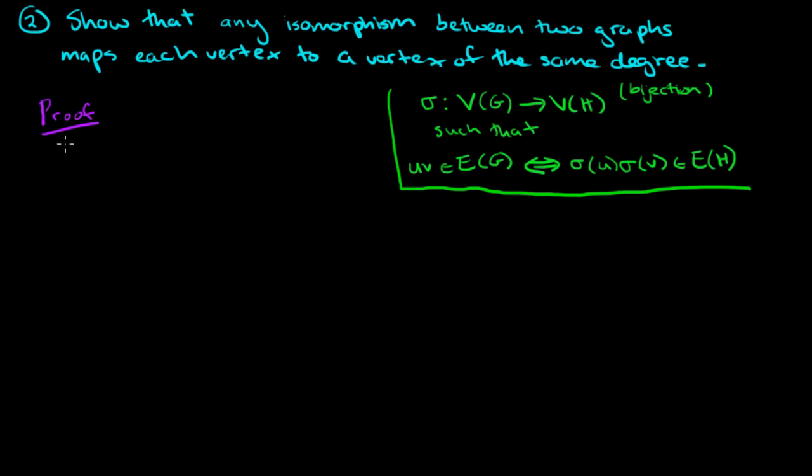So let's suppose there is an isomorphism. Suppose sigma is an isomorphism from G to H. And remember what an isomorphism is: it maps the vertices of G to the vertices of H as a bijection—it's one to one and onto.